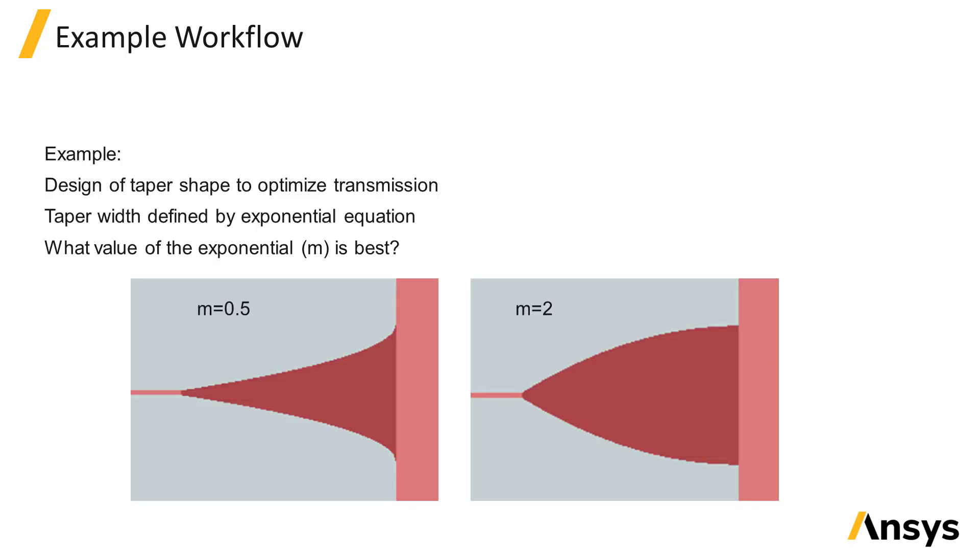Let's go through an example workflow for designing the optimal shape of a taper. Here, the taper width is described by an equation which includes a variable m that we want to vary in the design. We want to find the value of m which results in the maximum transmission through the taper.